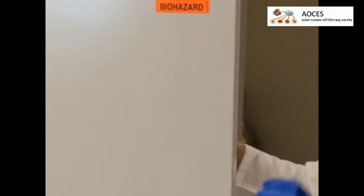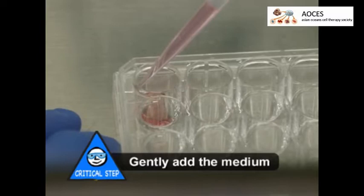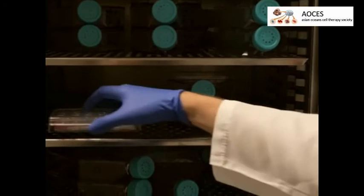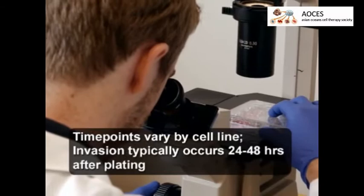Keeping the plate level, place it into a 37 degrees Celsius cell culture incubator and leave it undisturbed for 30 minutes. Once the 3D cultures have polymerized, slowly pipette 1 milliliter of warm cell culture medium into each well to submerge the culture. Then return the 3D cultures to the incubator.